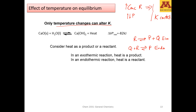If you have an exothermic reaction and you apply heat, you are adding a product. So for an exothermic reaction, if you increase the temperature, the reaction is going to shift towards reactants, because the reaction will try to consume the heat that is a product. However, for an endothermic reaction, if you increase the temperature, the reaction will evolve towards products because heat appears like a reactant, and the new equilibrium will try to consume that heat by shifting towards products.